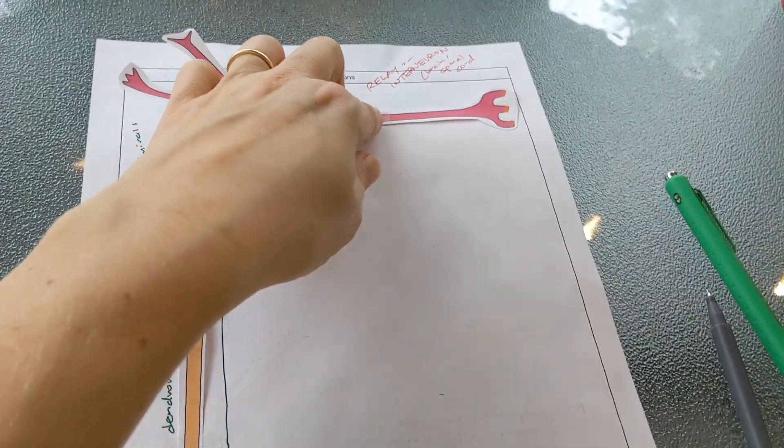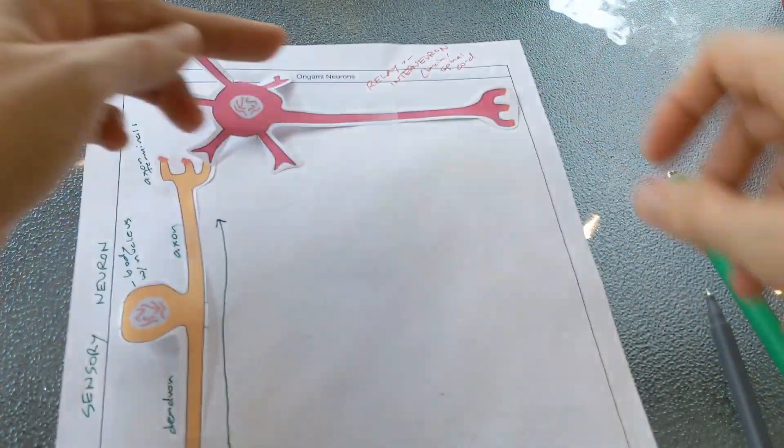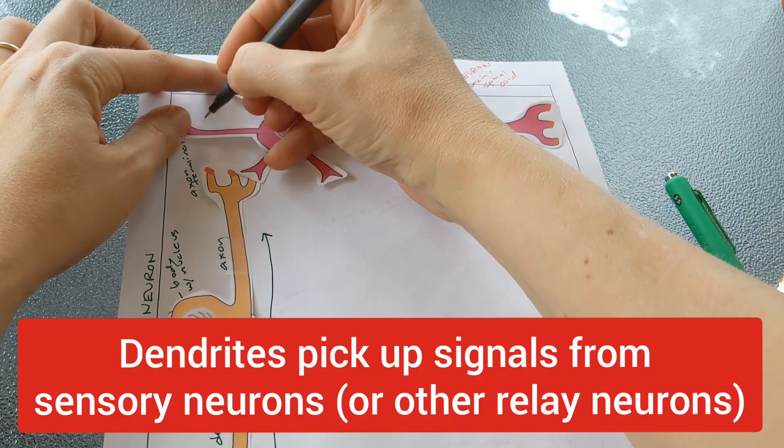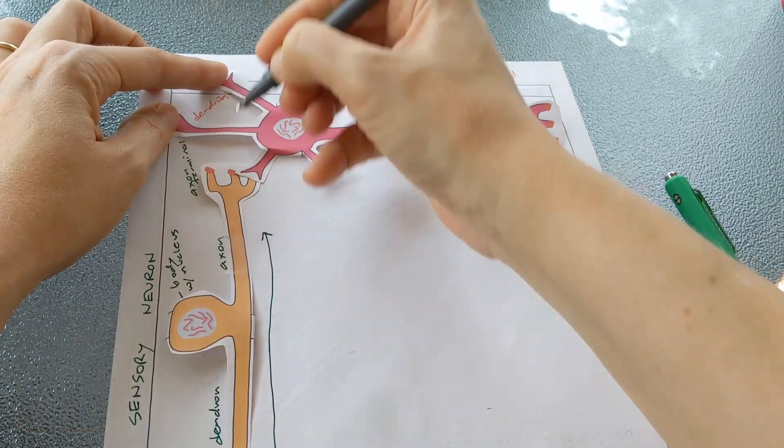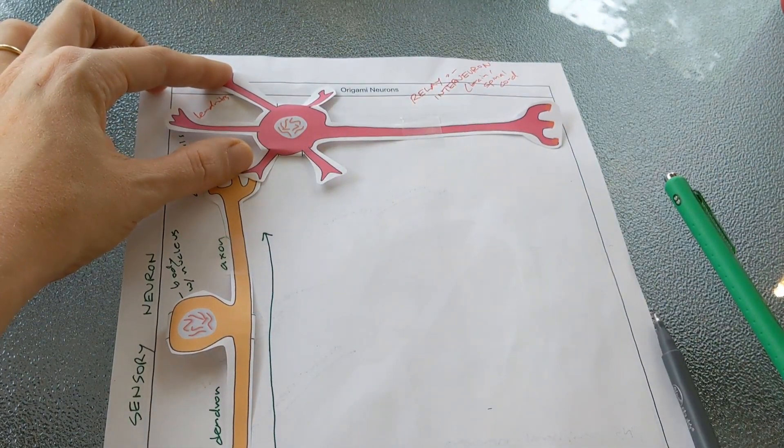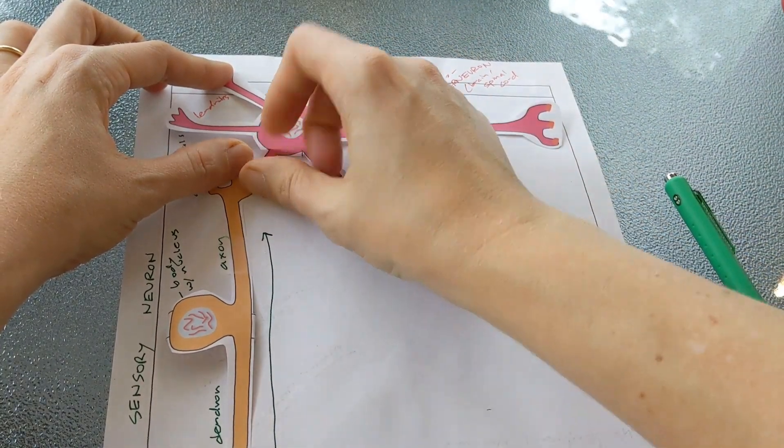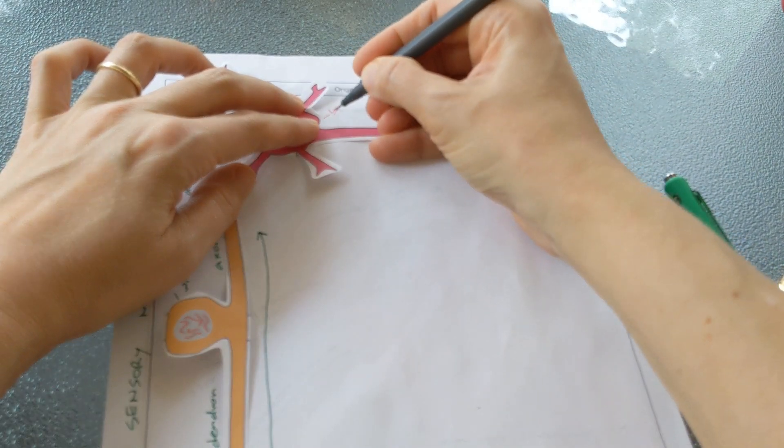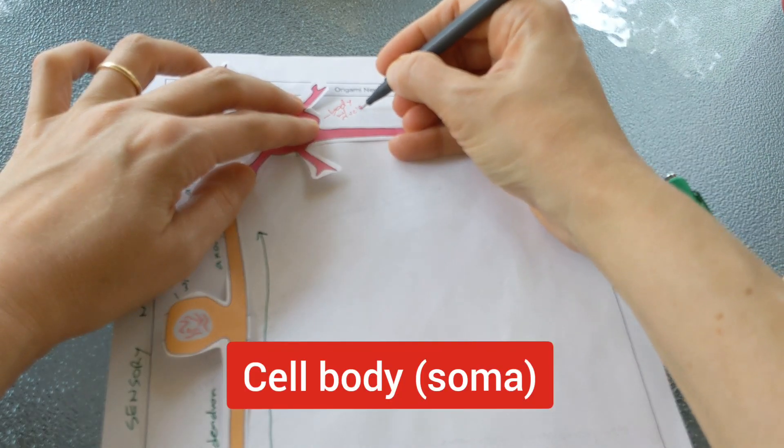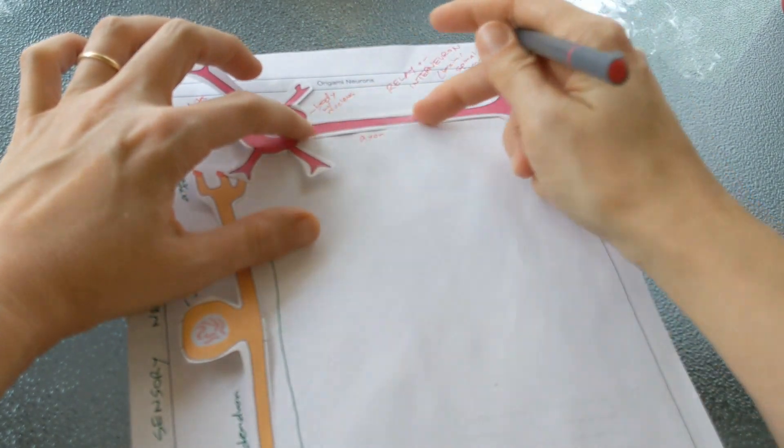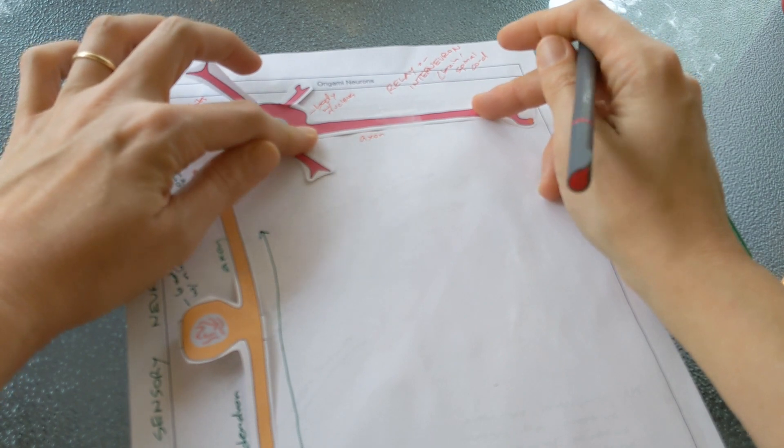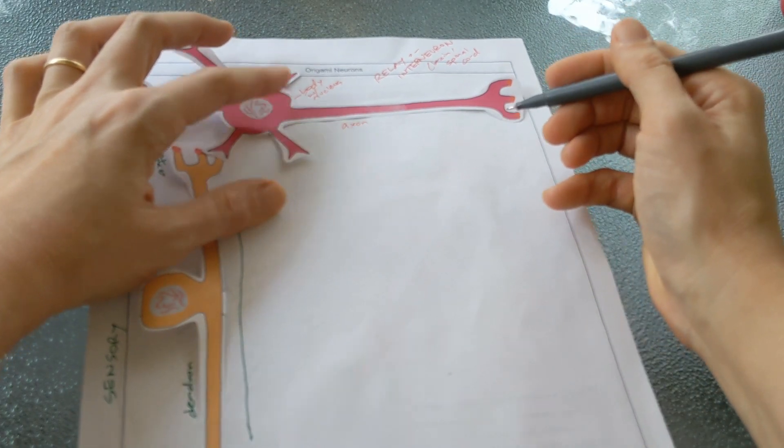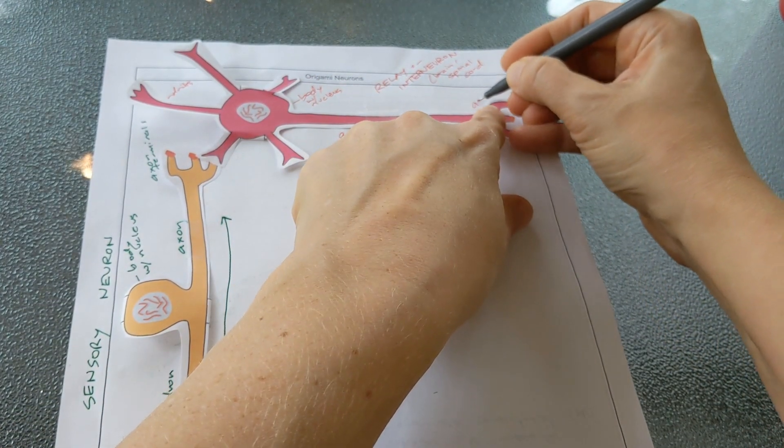Let's go ahead and tape down our relay neuron. And just like the sensory neuron, everything is going to start in the dendrites. The dendrites from this neuron connect to the axon terminals from the previous neuron, so I'm going to tape those together and that's where the signal jumps into this neuron. Then you can see we have the cell body and inside we have the nucleus. Here we have an axon. This axon is usually much shorter than the axon in the sensory or the motor neurons - those can be very long but this is usually a short axon. And at the end of this neuron again we have the axon terminals.